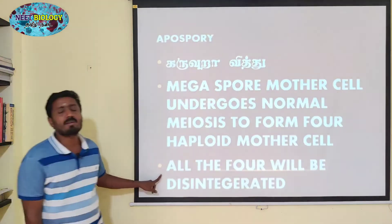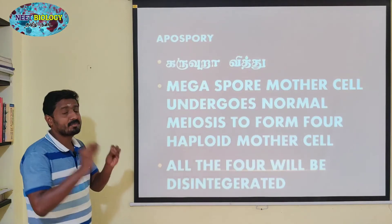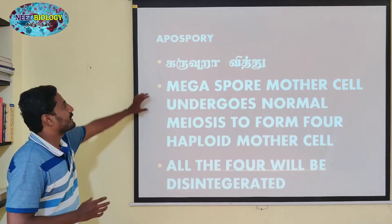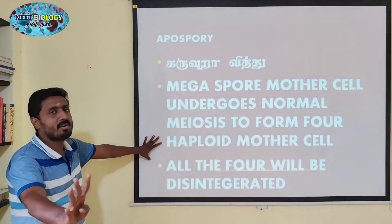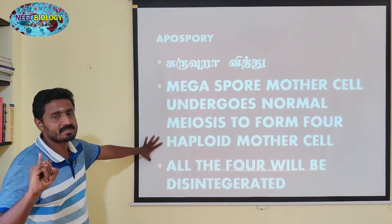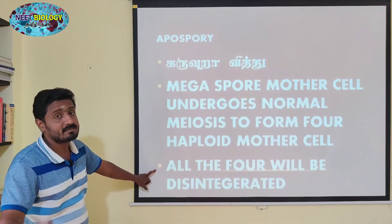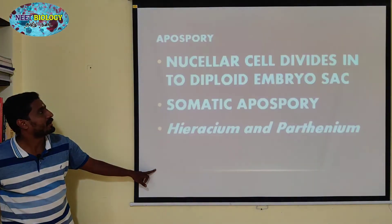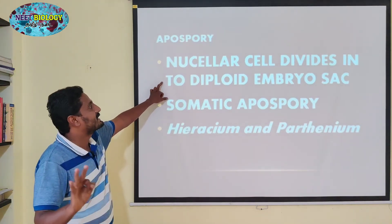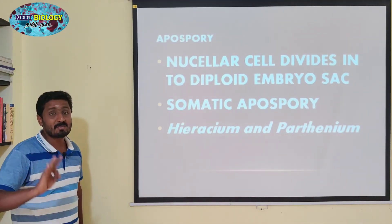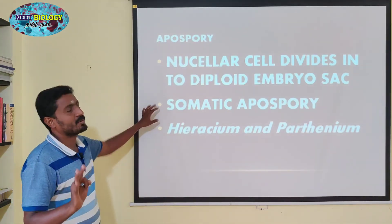This is one of the most important things. First of all, the megaspore mother cell undergoes normal meiosis to form four haploid cells. All four will be disintegrated. A new cell then divides to produce a diploid embryo sac. This is the apospory process.